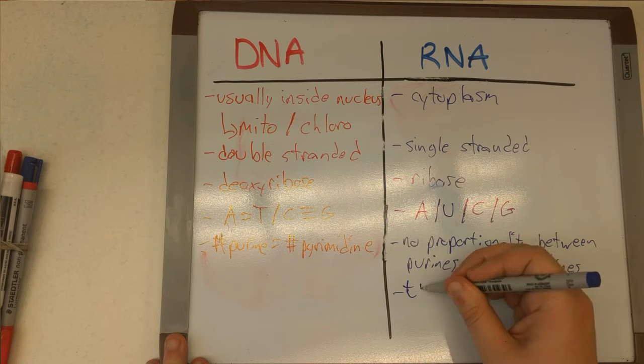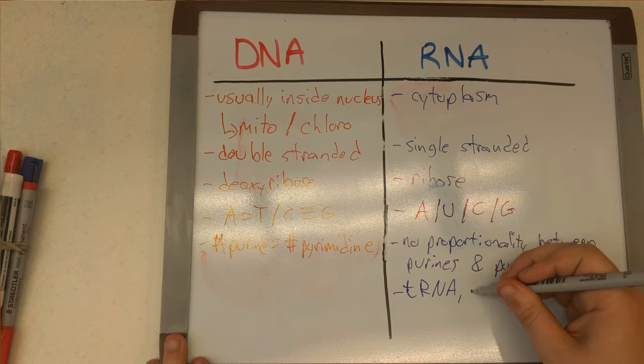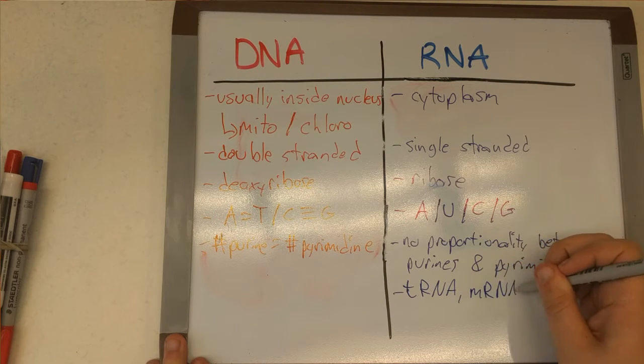There are also several types of RNA, the first being tRNA, which serves as the carrier of amino acids, and is extremely important in the translation process.